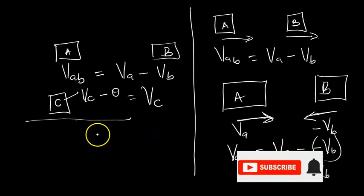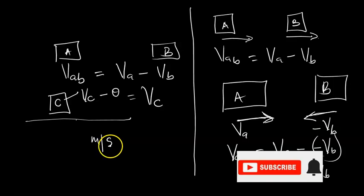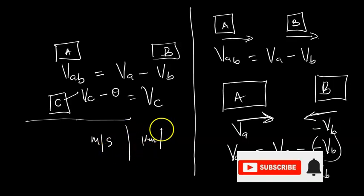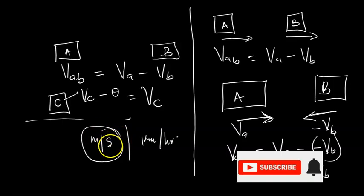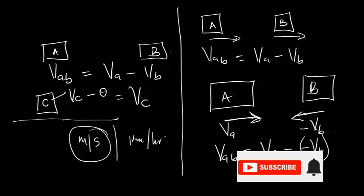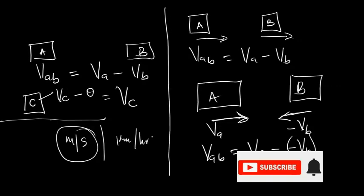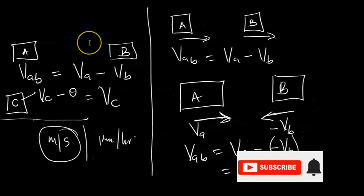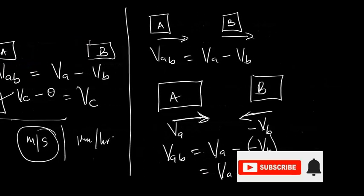The SI unit for relative velocity is meters per second, though you may also use kilometers per hour. The SI unit is meters per second. Now let's try our example question.